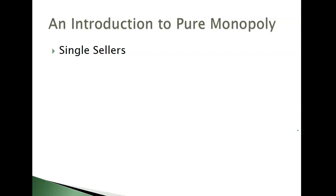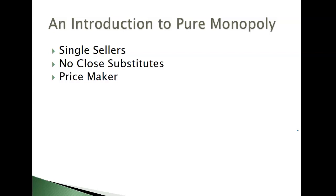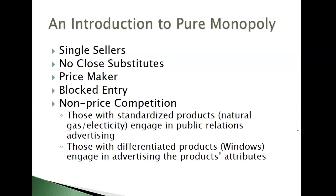Very quick overview: one seller in the industry, no close substitutes, price maker, blocked entry, and non-price competition. Non-price competition is when businesses have to compete without changing their prices. We're going to see this a lot more in oligopolies.